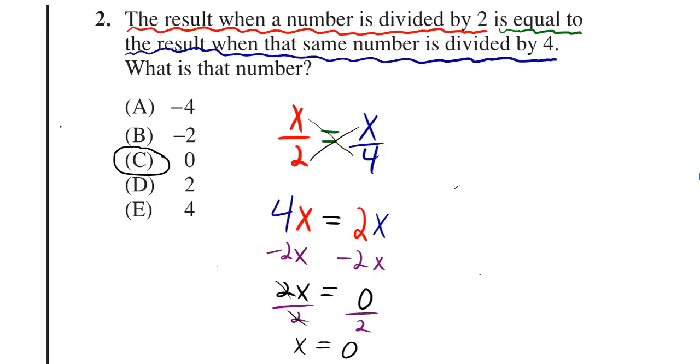The result when a number is divided by 2, we can write that as x over 2 if we let x be the number, is equal to the result when that same number is divided by 4. We still have to use the same number, so we still have to use x to represent that number, so it's going to now look like x over 4.